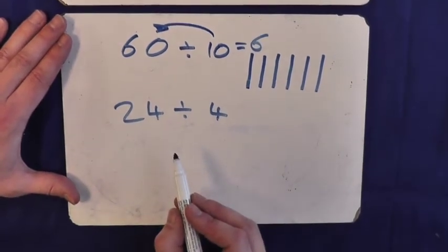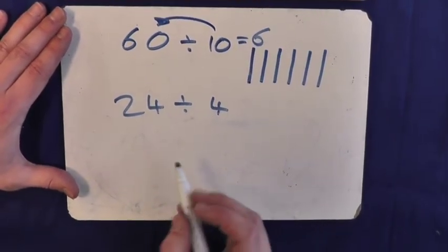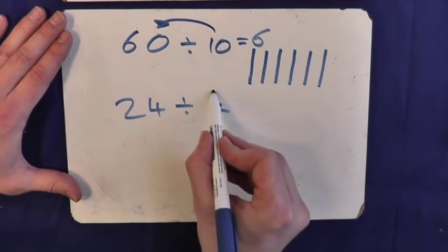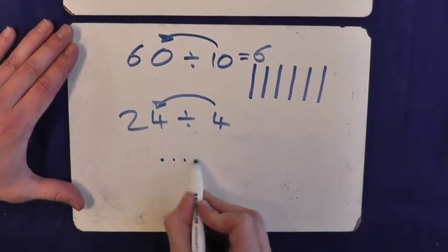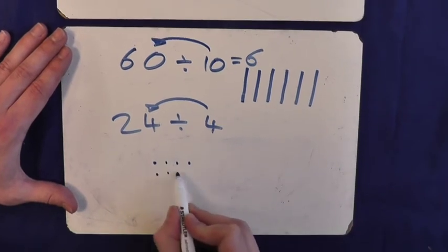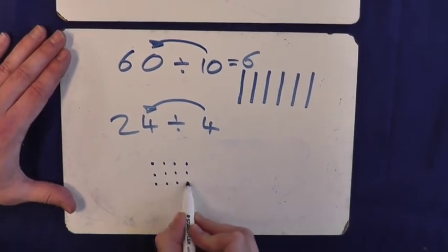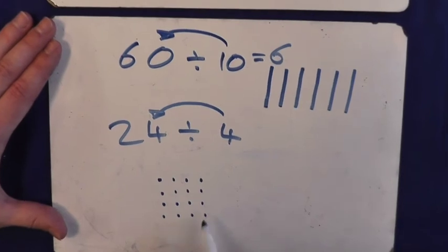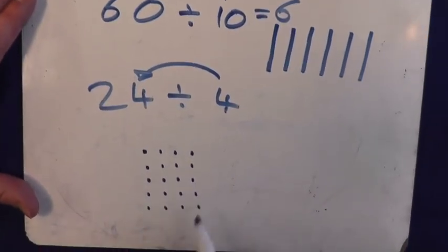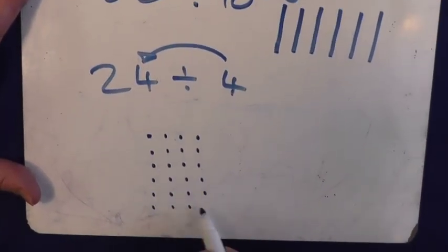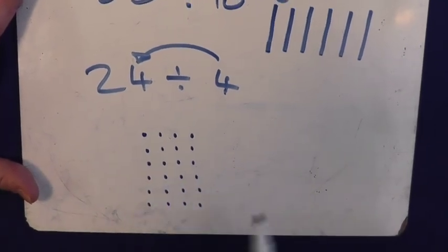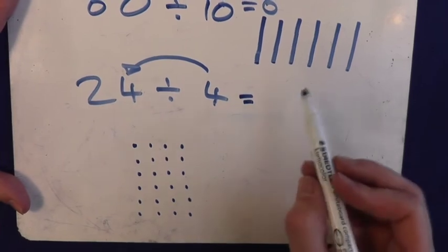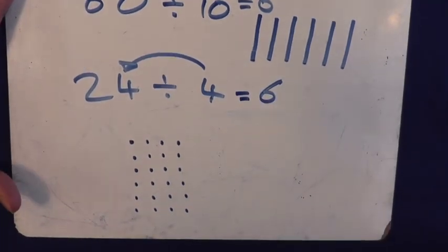And lastly, even with a more tricky division question, we can draw those arrays. So again, how many 4's make 24? 1, 2, 3, 4, 5, 6, 7, 8, 9, 10, 11, 12, 13, 14, 15, 16, 17, 18, 19, 20, 21, 22, 23, 24. That's 1, 2, 3, 4, 5, 6 rows of 4. 6 lots of 4. 24 divided by 4 is 6.